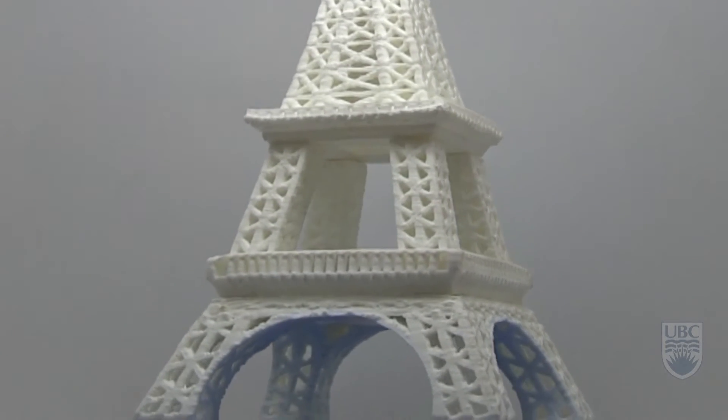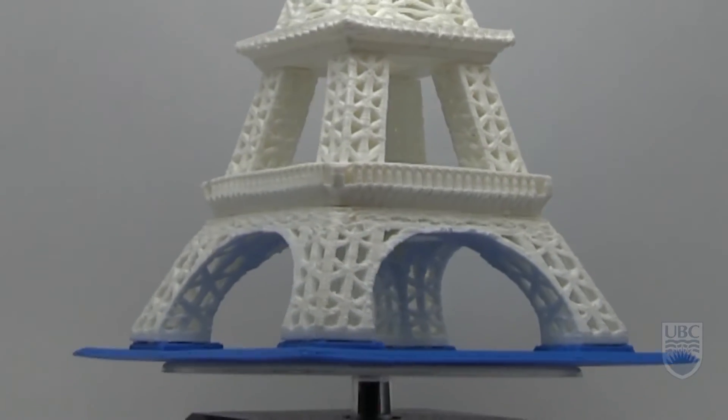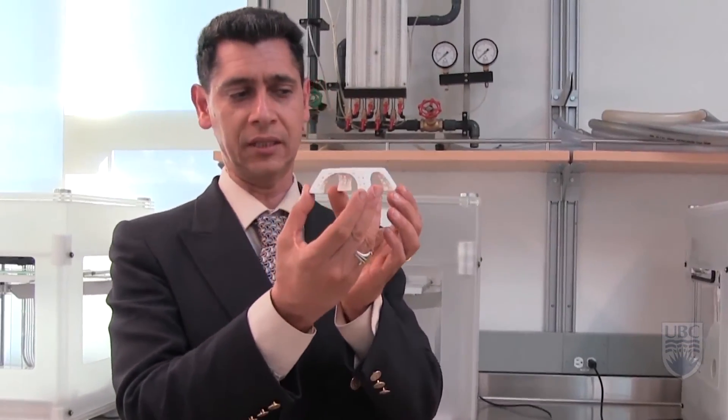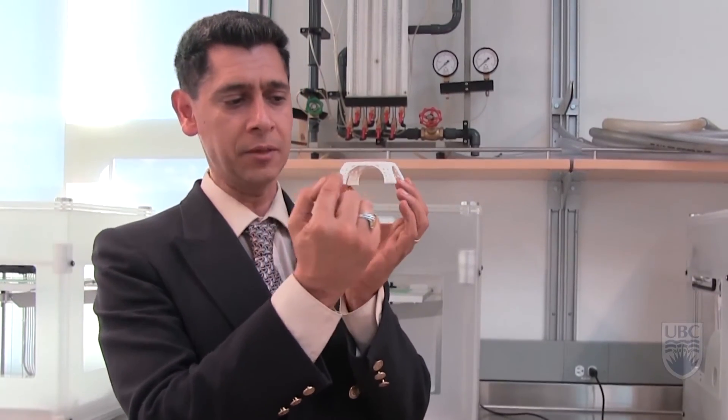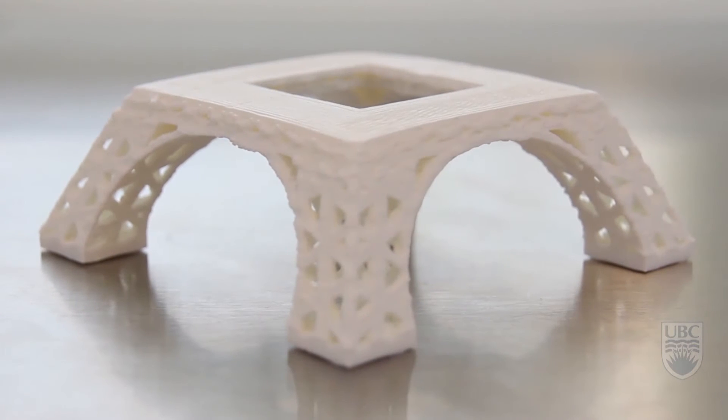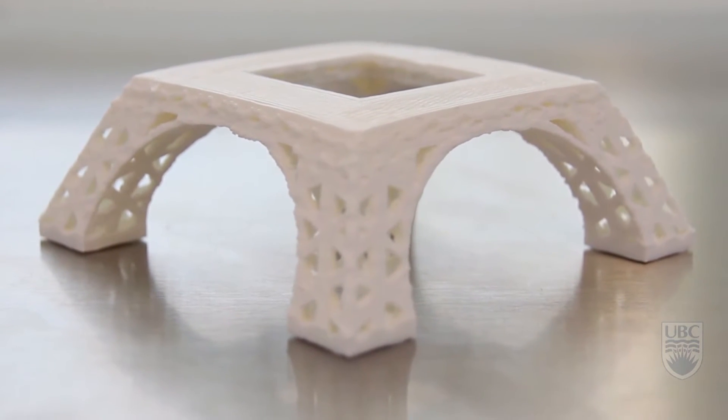That's one of the limitations, mostly because of the bottom piece here. If I would have printed just like this, obviously, when it goes line by line, when you get to this point, nothing is supporting it and it won't sustain. So gravity is pushing it down.